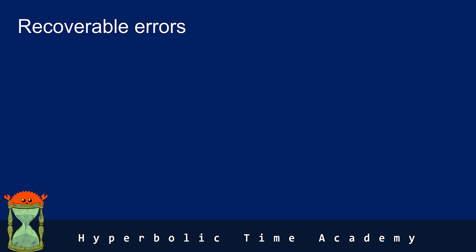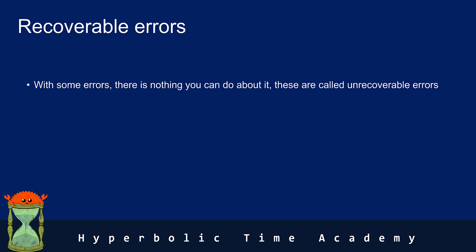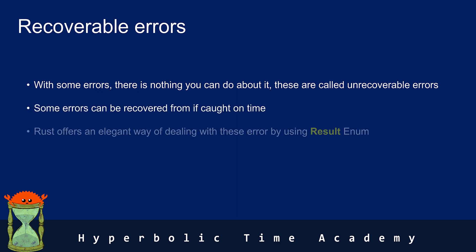Let's discuss what we mean by recoverable errors. As you well know, there are things that can and often do go wrong in code. This could be anything from missing files to network resource disconnections. With Rust, there is an elegant way to deal with these situations, and that is by using the result enum.